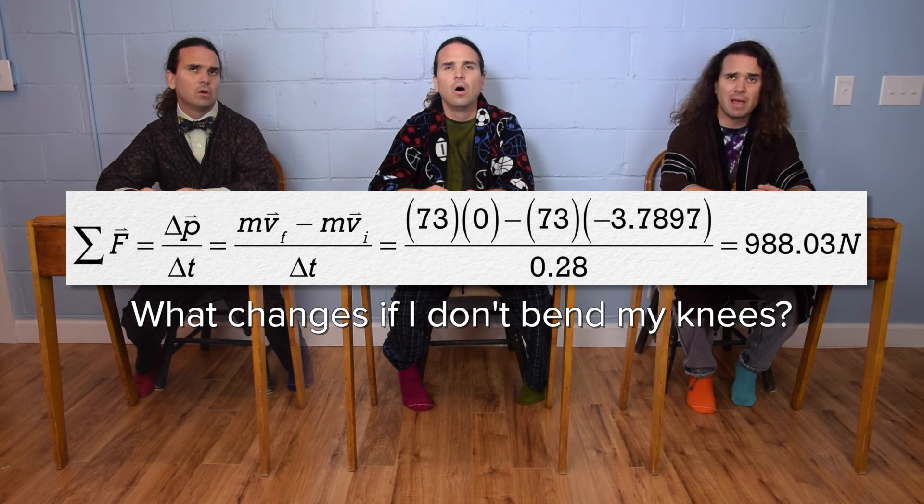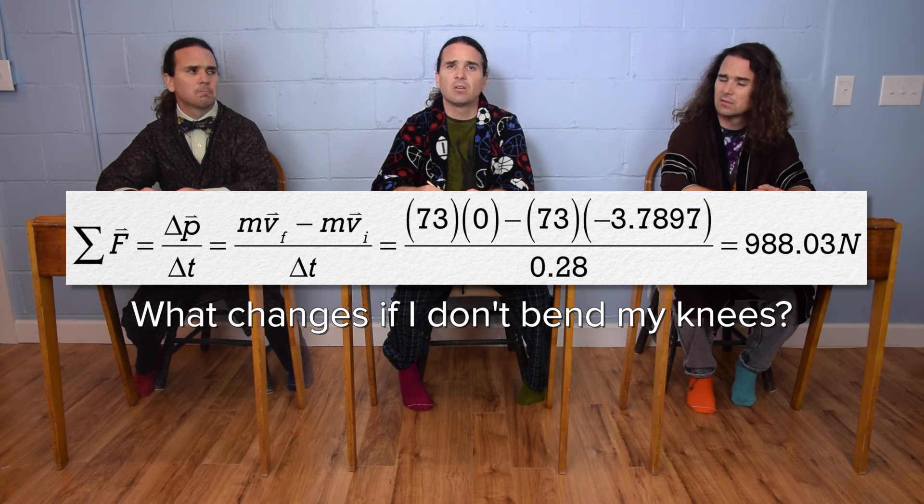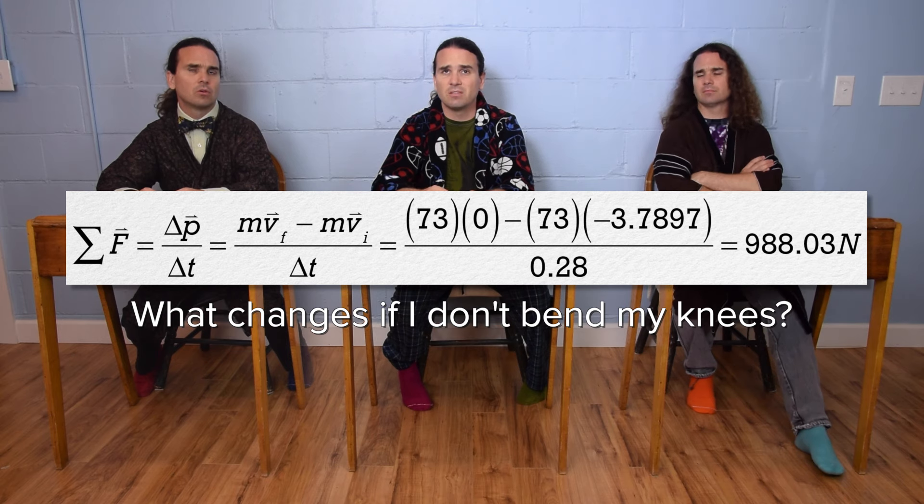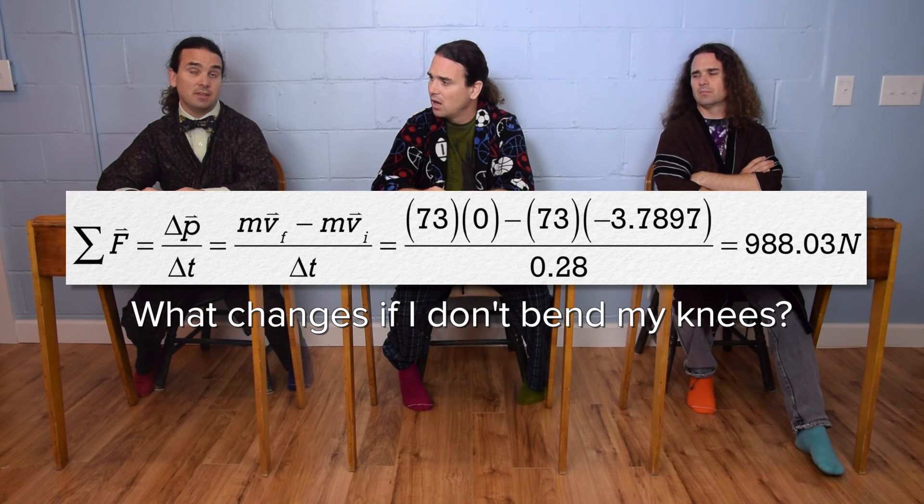Well, clearly your mass doesn't change. And your final velocity is still zero. You're going to stop regardless of whether you bend your knees or not. And your initial velocity right before striking the ground will be the same because you stepped off the same wall.